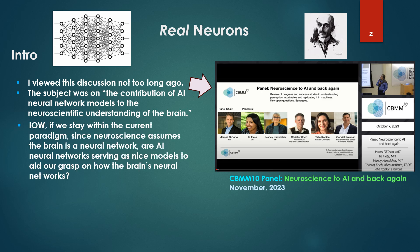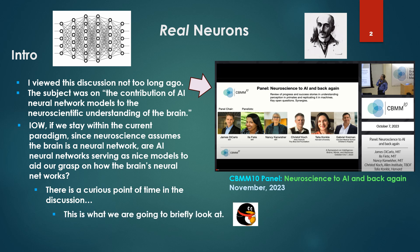In other words, staying within the current paradigm — since neuroscience assumes the brain is a neural network — are our AI neural networks serving as nice models to aid our grasp on how the brain's neural network works? Good models to bounce off of. There's a curious point in the discussion that we're going to briefly look at.